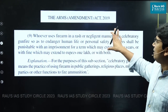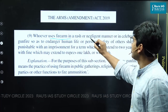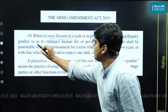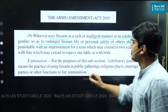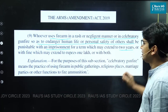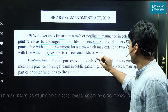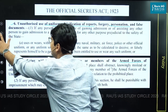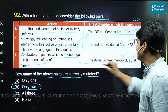Under the Arms Amendment Act of 2019, whoever uses a firearm in a rash or negligent manner, or in celebratory gunfire so as to endanger human life or the personal safety of others, shall be punishable with imprisonment for a term which may extend to two years, or with a fine which may extend to one lakh rupees, or with both. Hence, the third pairing is confirmed correct.